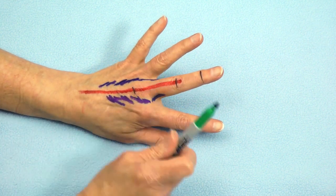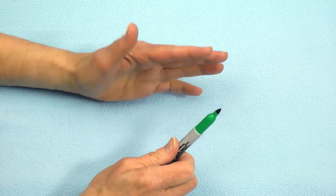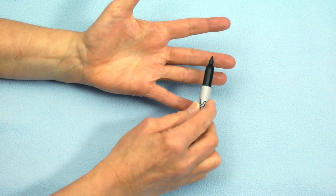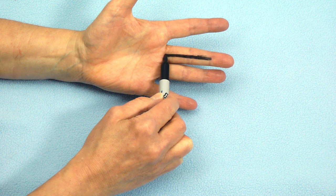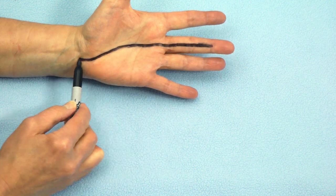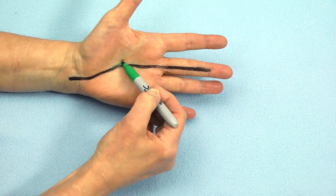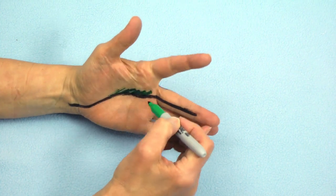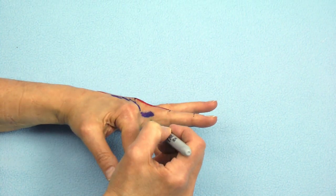The third color we're using is green, and we're using that to represent the lumbrical muscle, which actually arises from the flexor digitorum profundus. So we're going to use black to represent the flexor digitorum profundus on the long finger. And the green represents the muscle, which then also goes obliquely up into the web space on the radial aspect.